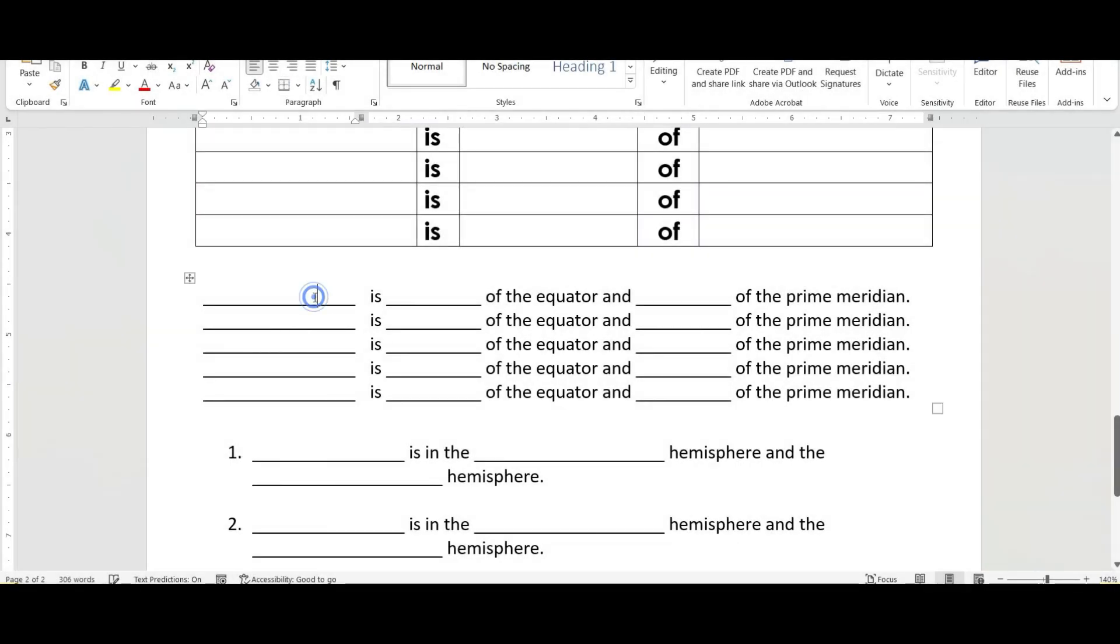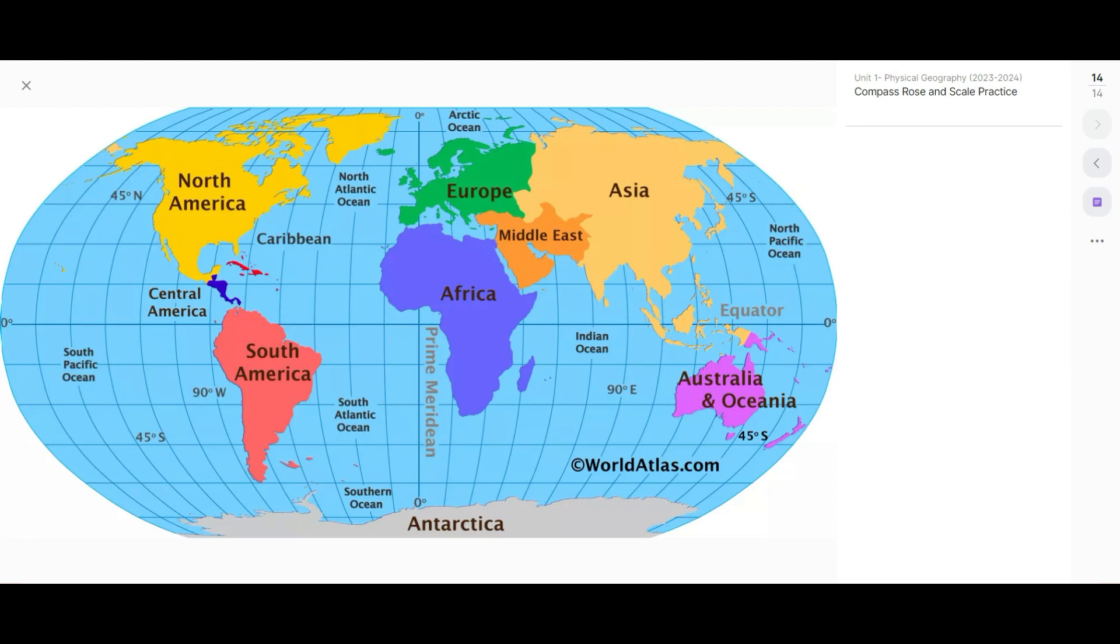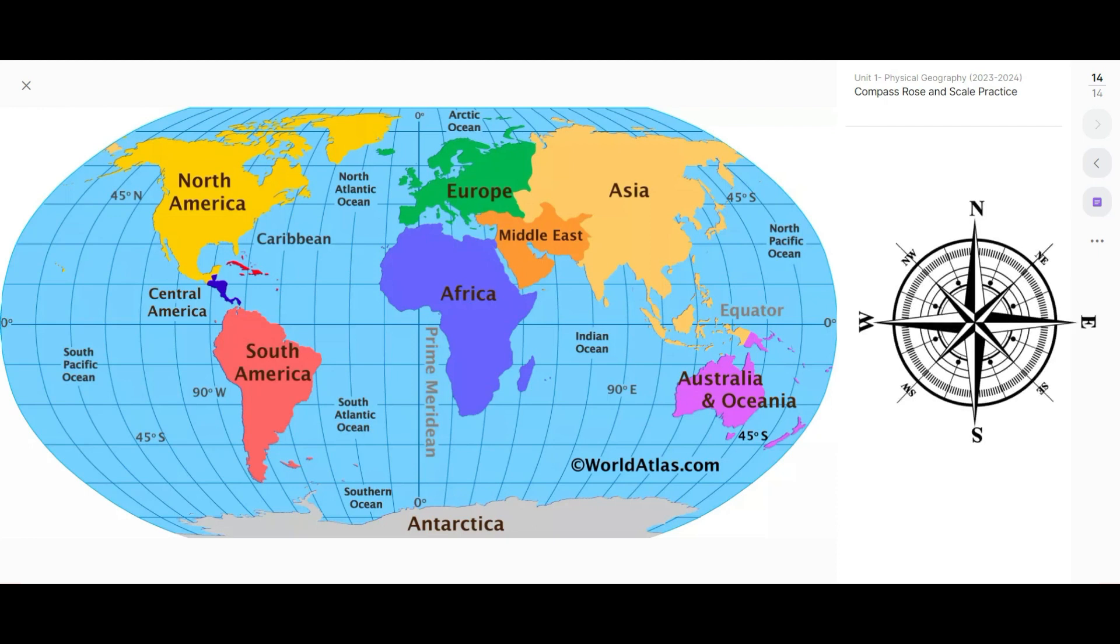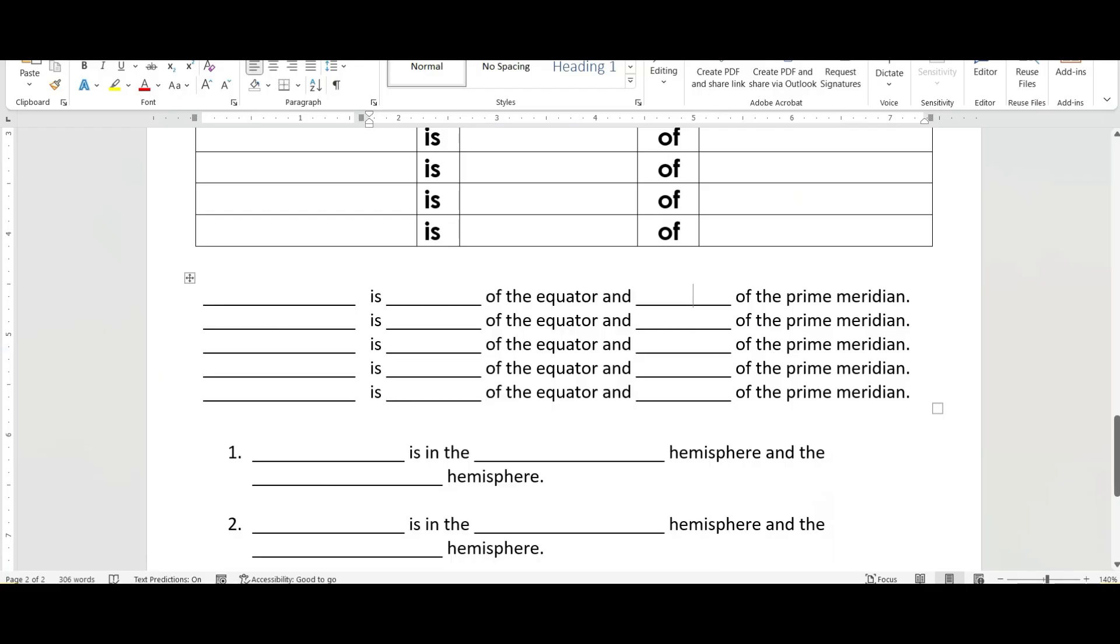Here we've got blank is blank of the equator and blank of the prime meridian. For this one we're going to use our world map. Hopefully you remember, if you don't, you can see this line right here is the equator and this line is the prime meridian. What we're going to need to do is pick a location on the map, any location.